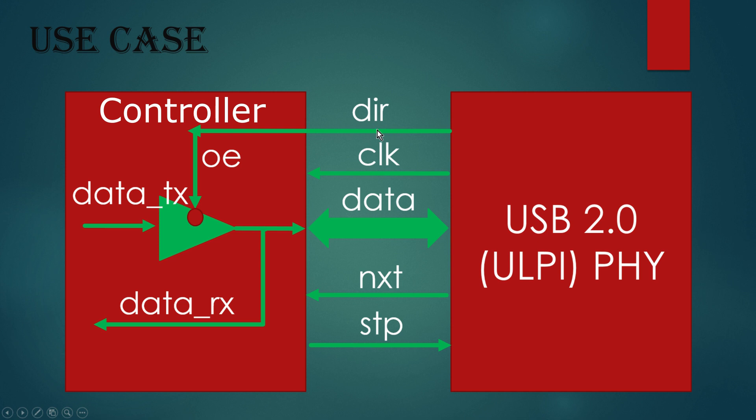DIR meaning direction. Actually, this signal governs the direction of DataBus. If DIR is high, that means data from physical layer to controller is going on. If DIR is low, that means data is passing from controller to the PHY.